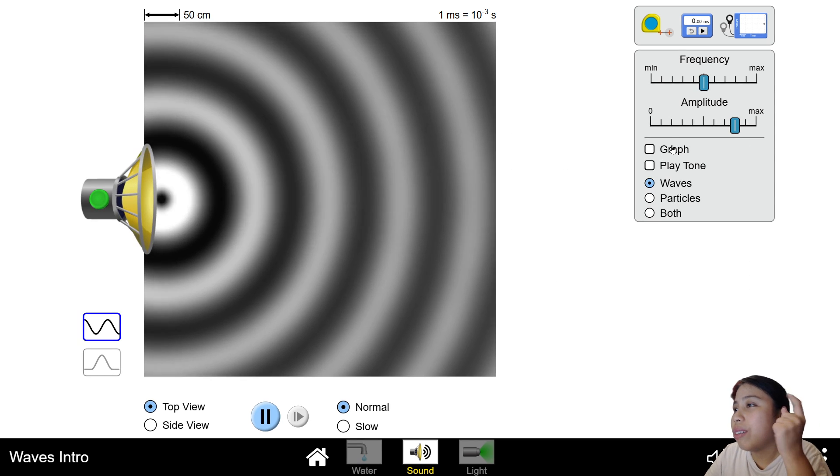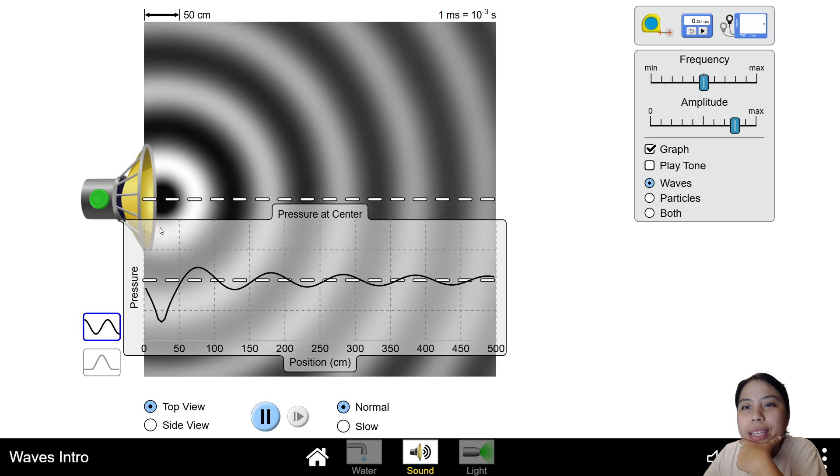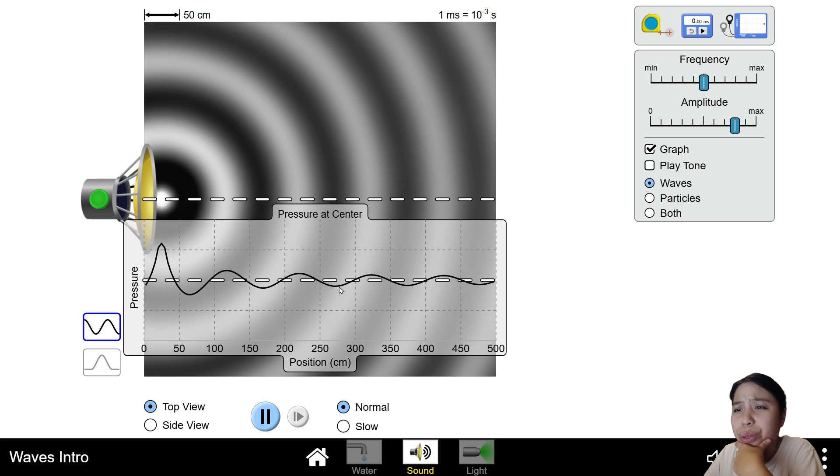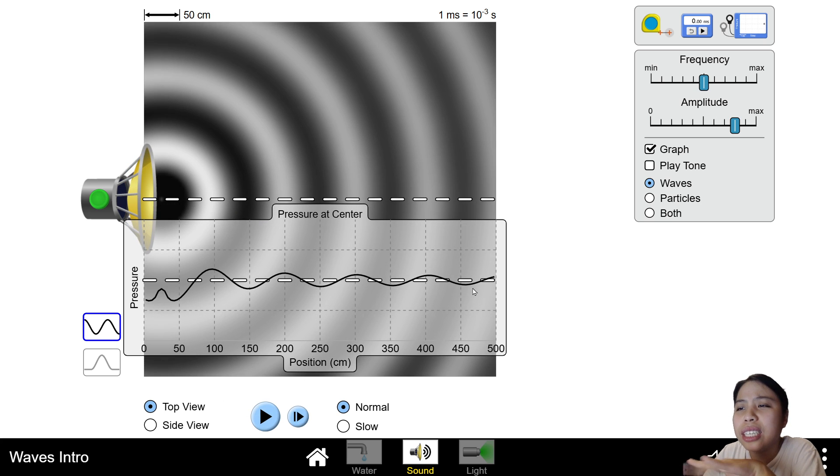Now if we look at the graph, at the source, the amplitude is the biggest, but as it goes further away, you notice that this amplitude gets smaller and smaller.